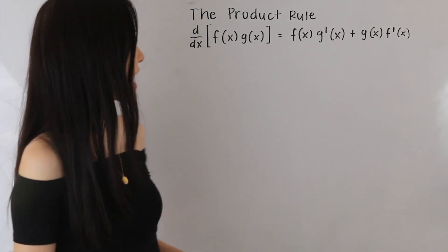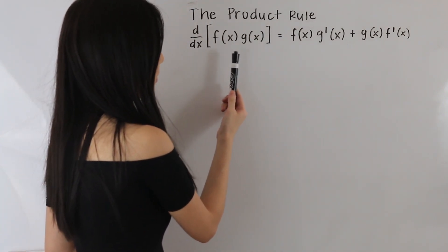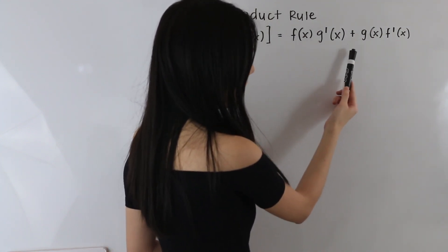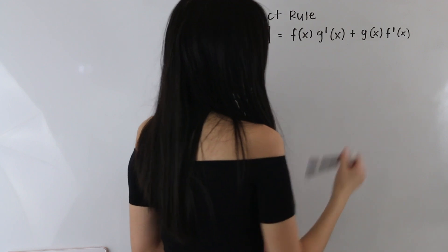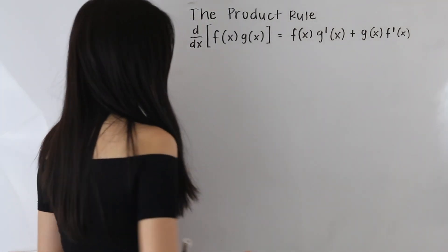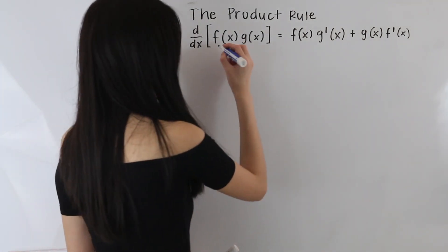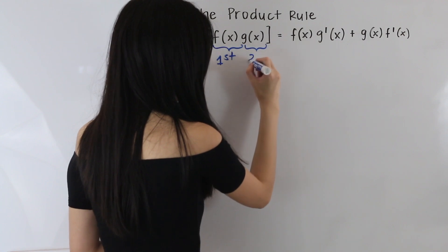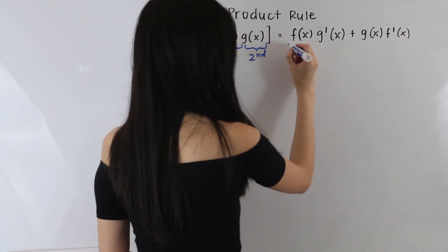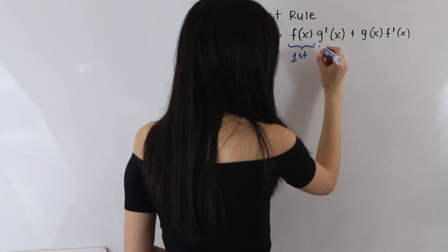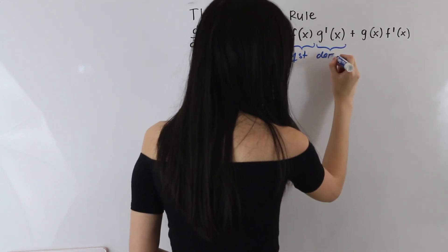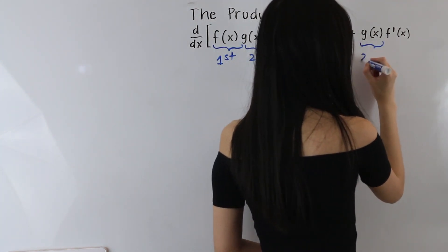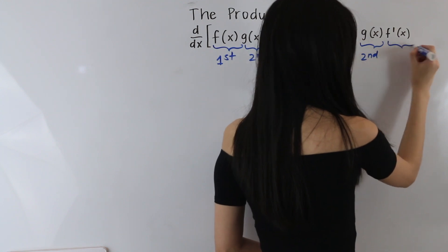The product rule says that the derivative with respect to x of f(x) times g(x) is equal to f(x) times g'(x) plus g(x) times f'(x). The way I like to remember this is by referring to f(x) as the first function and g(x) as the second function, so the right-hand side becomes the first times the derivative of the second, plus the second times the derivative of the first.